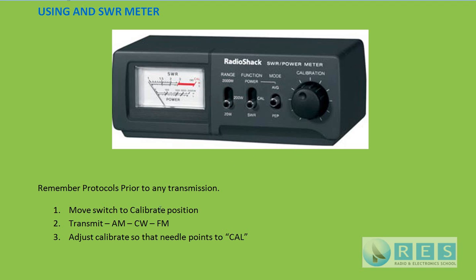Once you've done that, the only thing left to do — step four — is switch to SWR and take the reading. You're still transmitting; you were on the calibrate position and adjusted for full scale. While still transmitting, move the switch down to SWR and read your SWR off the top scale: 1 to 1, 1.5 to 1, 2 to 1, 3 to 1, and so on up to infinity. A good SWR is 1.5 to 1 or less.